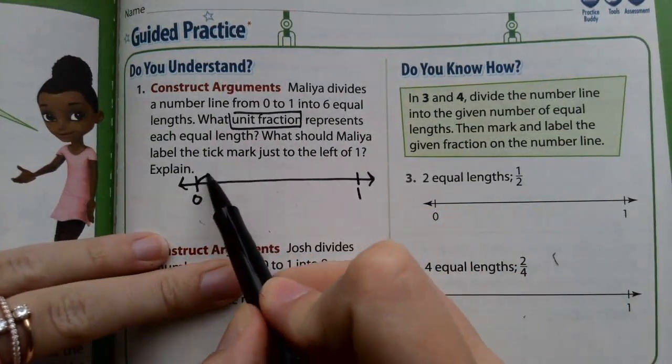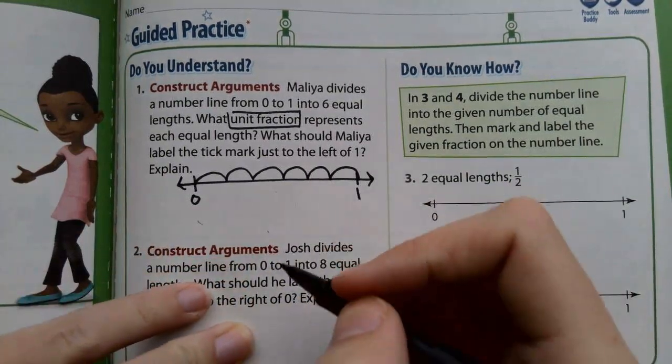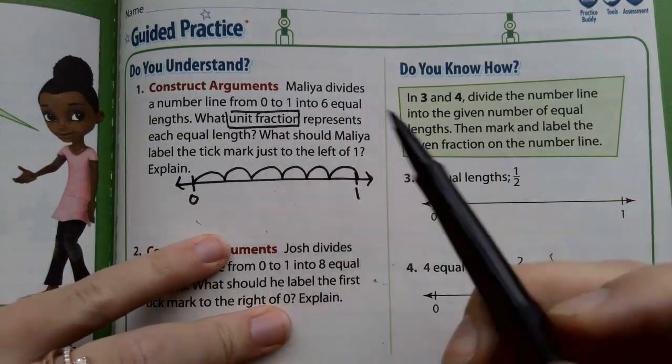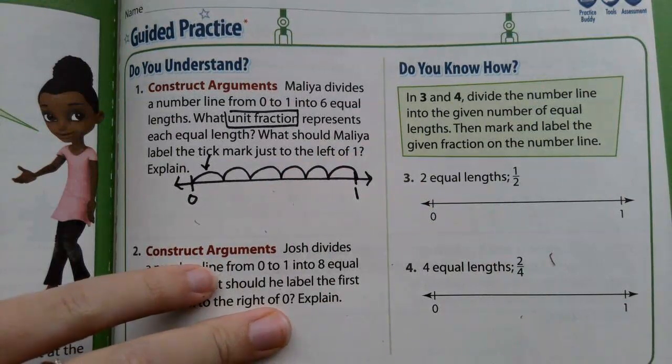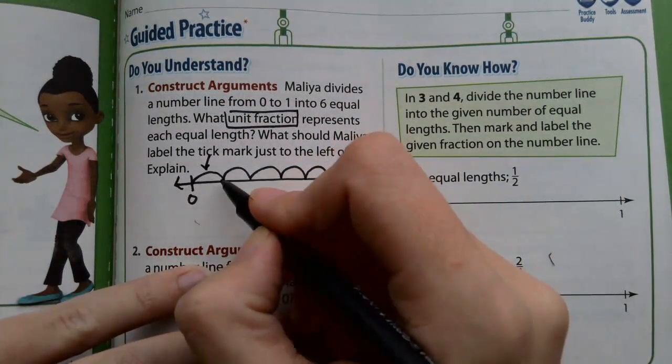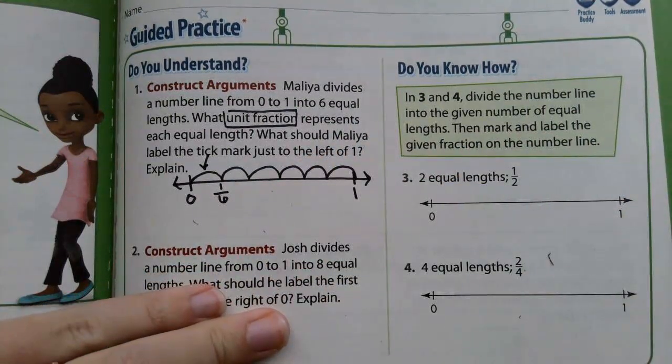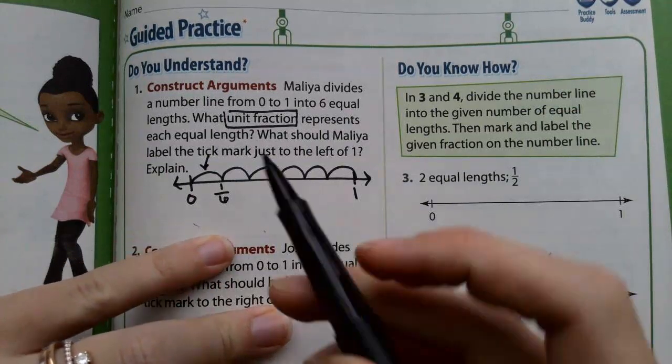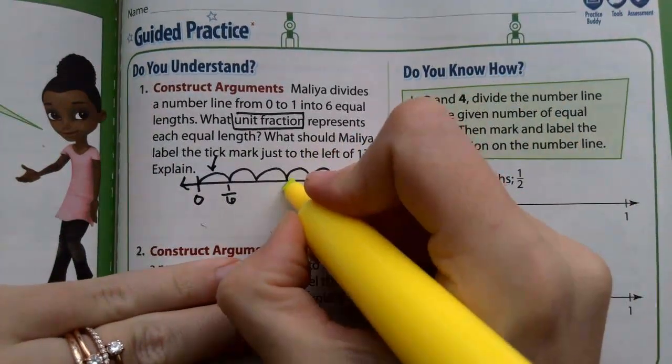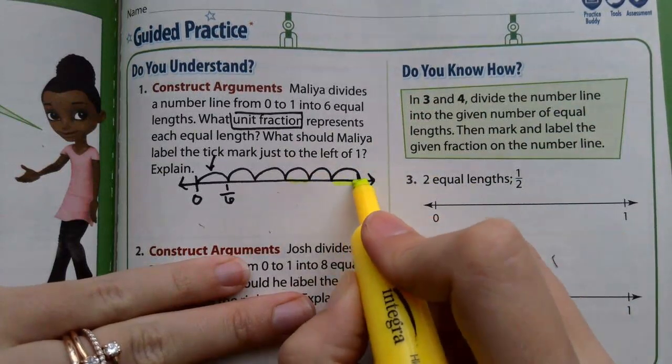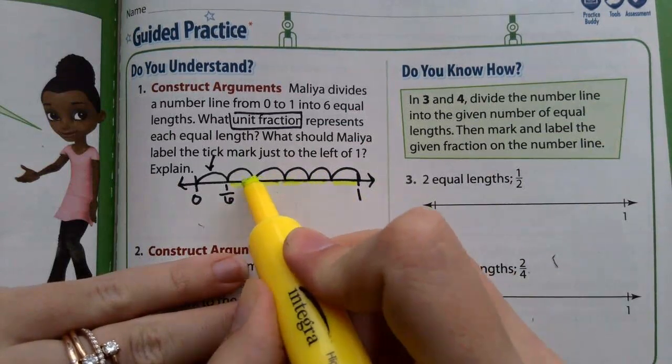We have 6 equal parts. So I made 6 hops. And they're asking for a unit fraction. So what's just 1 part of this equal? 1 hop out of 6 hops. 1/6. So the unit fraction is 1/6. Each one of these parts, this one is 1/6, this one is 1/6 long, this one is 1/6 long. They are all 1/6 long.